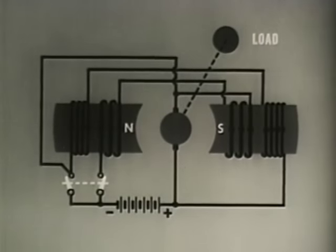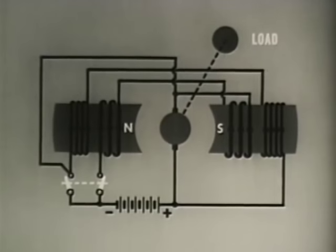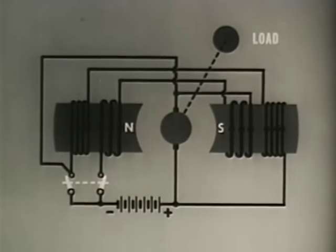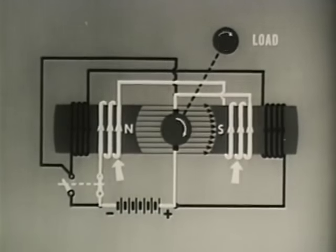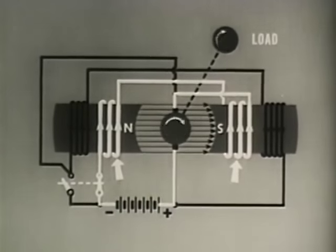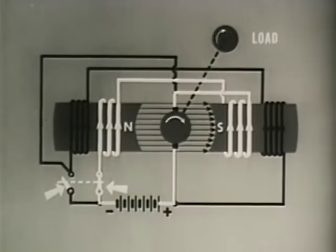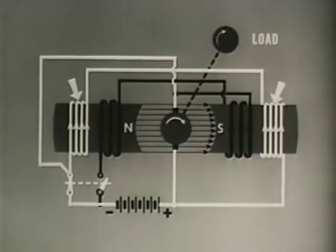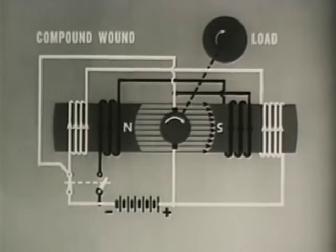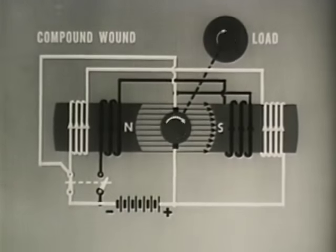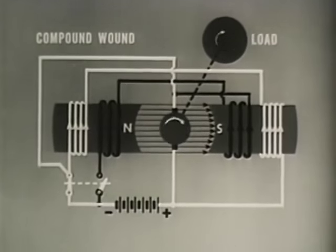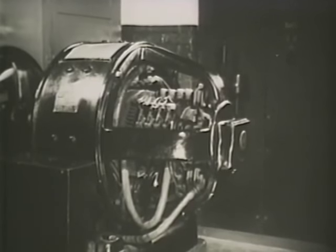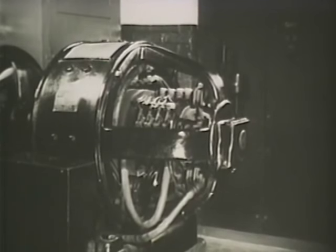The desirable characteristics of both the series and shunt wound motors can be achieved in the compound wound motor. In order to obtain good starting torque, the series field is used. When running speed has been attained, a centrifugal switch cuts out the series field and cuts in the shunt field — it is now a shunt motor and the speed regulation is good. Compounding provides good starting torque and good speed regulation, allowing for efficient operation and minimizing the possibility of damage to the motor.